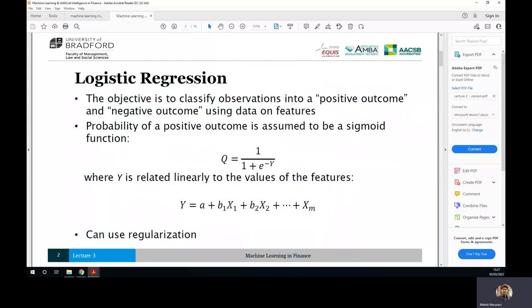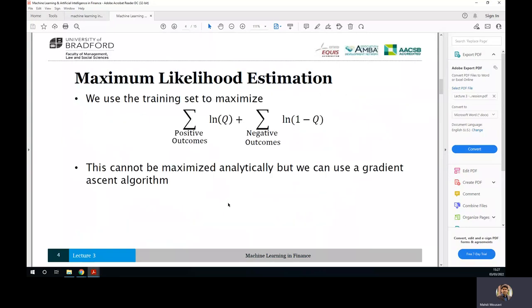So how we decide which features that we put in this model end up with the best result for forecasting? We say that we use a maximum likelihood estimation.